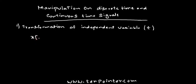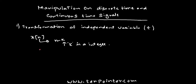A discrete signal x of n may be shifted in time by replacing the independent variable n by n minus k, where k is an integer. k can take both positive and negative values. If k is a positive integer, this time shift results in a delay of the signal by k units of time. For example, when k equals 2, x of n minus 2 is the signal x of n delayed by 2 units.